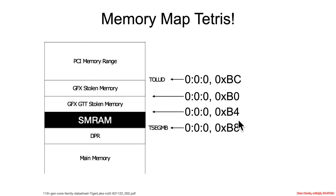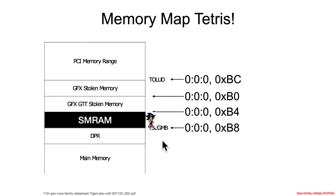Offset B4 is the GTT stolen memory, and TSEG is at offset B8. So you can see a whole bunch of stuff in the memory controller space at bus 0, device 0, function 0. The SMRAM here is bounded by TSEG on the bottom and graphics stolen memory on the top.